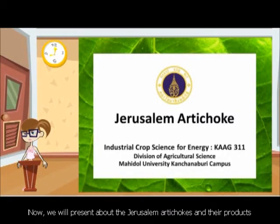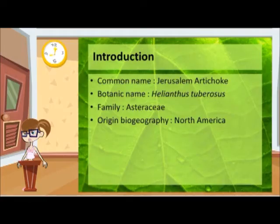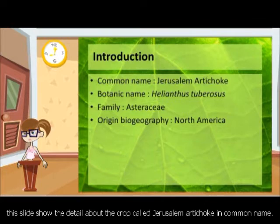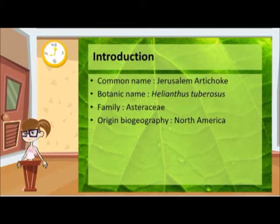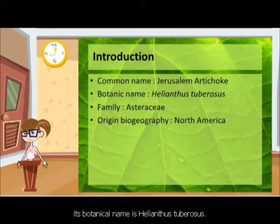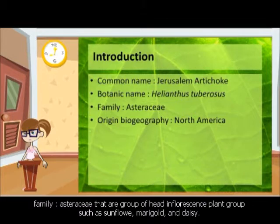We will present about the Jerusalem Artichoke and their products. Introduction Number 1: this slide shows details about the crop called Jerusalem Artichoke in common name. Number 2: its botanical name is Helianthus tuberosus. Number 3: Family Asteraceae, which is the group of head inflorescence plants, such as sunflower, marigold, and daisy.